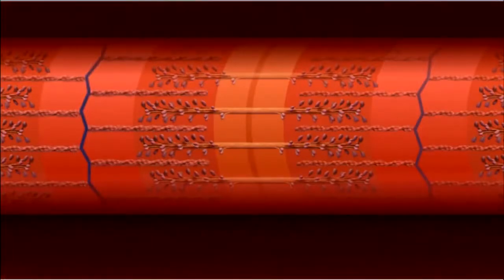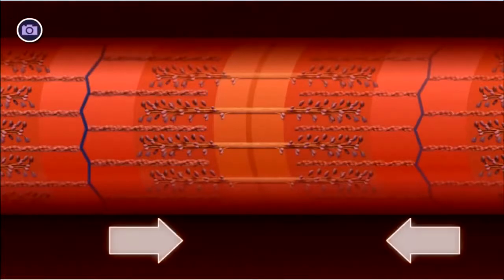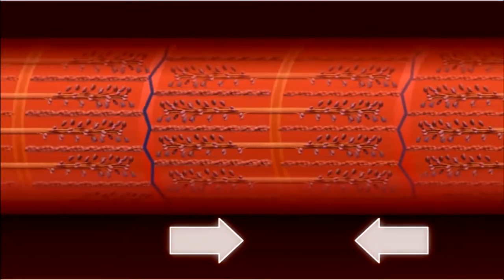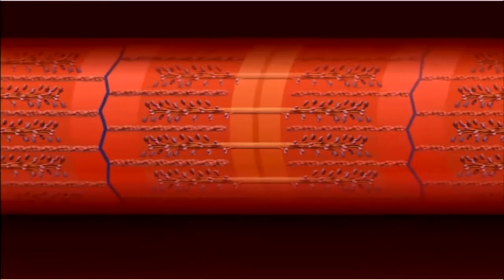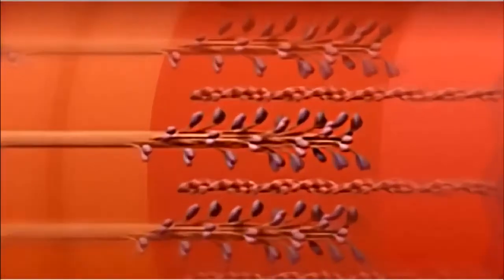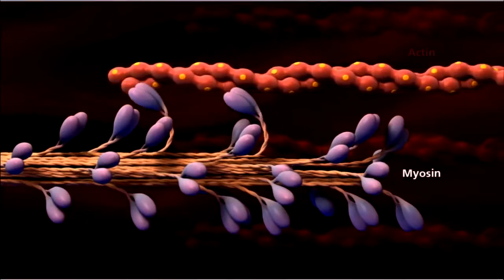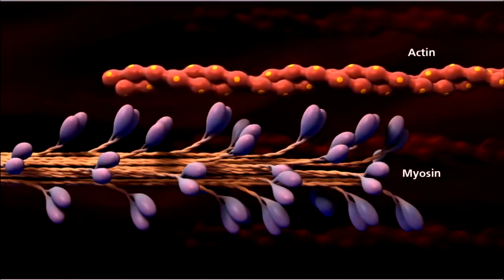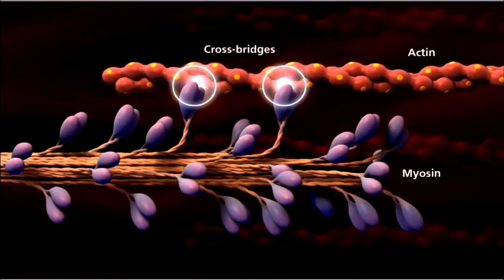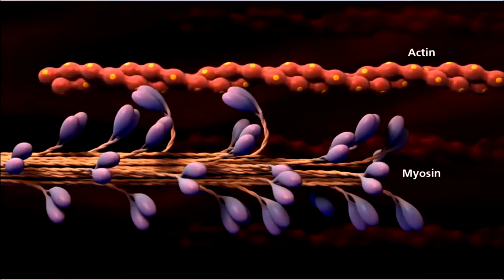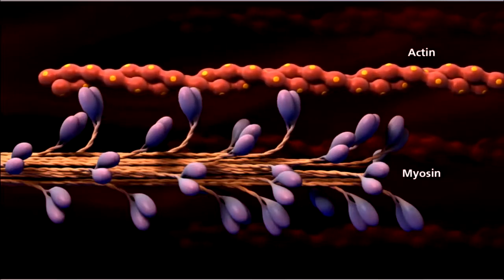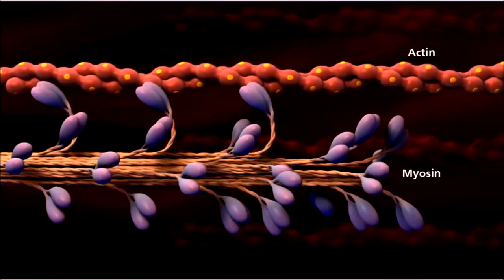Because the actin filaments are anchored to the Z-lines, the sarcomere shortens from both sides when actin filaments slide along the myosin filaments. Although the action between the filaments is described as sliding, the myosin filament actually pulls the actin along its length. The cross-bridges of the myosin filaments attach to the actin filaments and exert force on them to move.